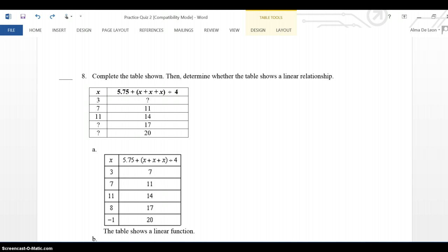Complete the table shown, then determine whether the table shows a linear relationship. So I'm trying to figure out if this table will get me something with a line. Looking at my table, I normally have x and y.